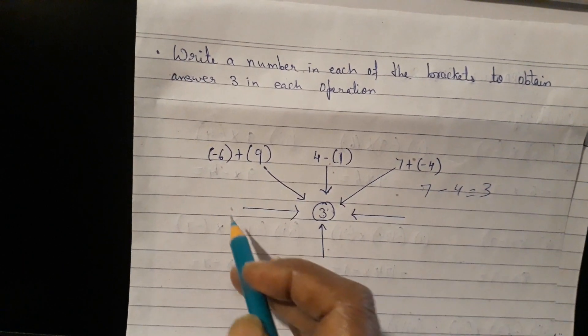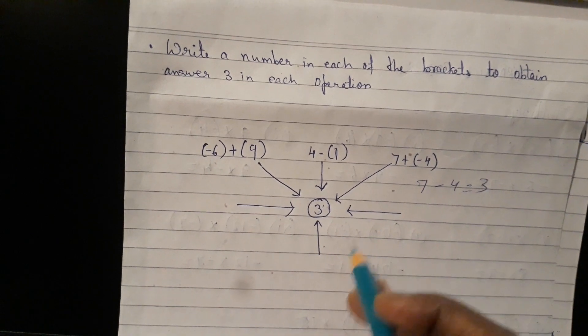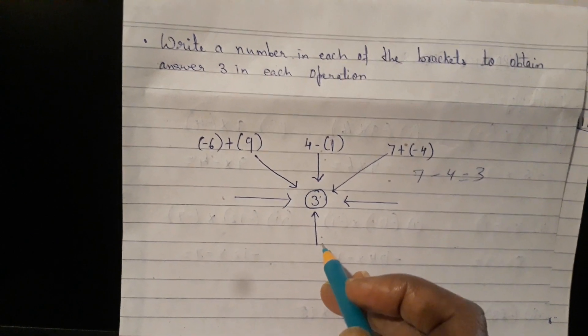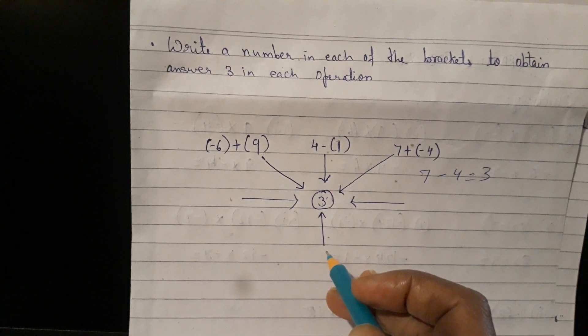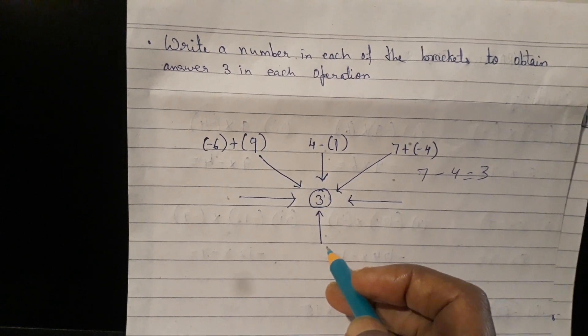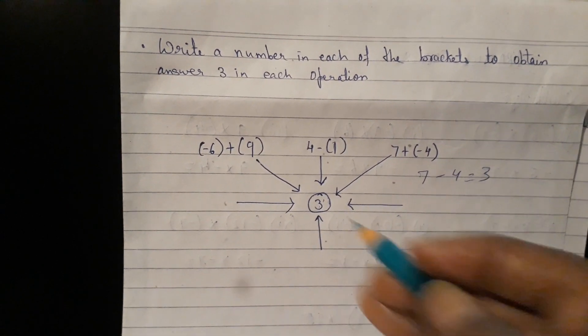So these two, that is 1, 2 and 3, you will do it for yourself. That's how we will come to know, oh yes, you have done it. Now we proceed for practice set 8.